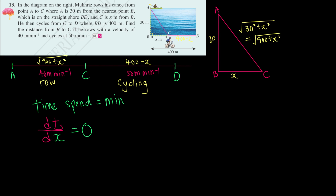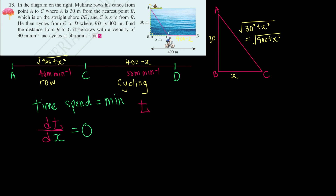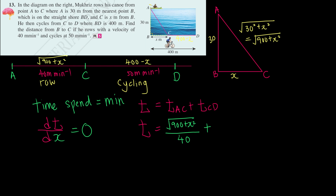We need the equation for T. Using distance = time × speed, so time = distance ÷ speed. Total time T = time for AC + time for CD = √(900 + x²)/40 + (400 − x)/50. Simplifying: T = √(900 + x²)/40 + 8 − x/50.